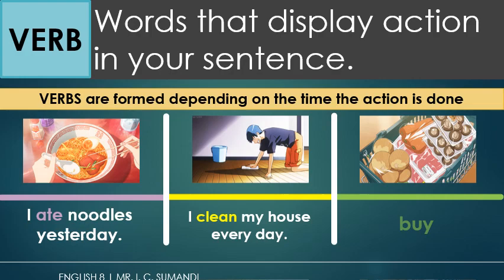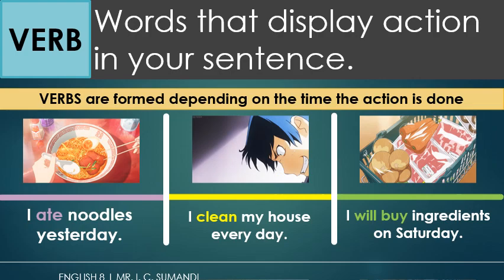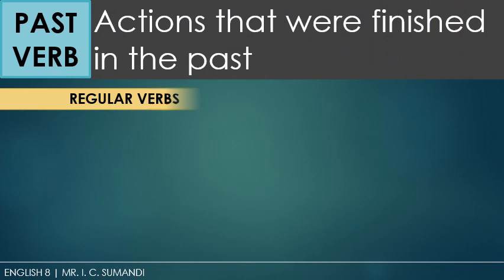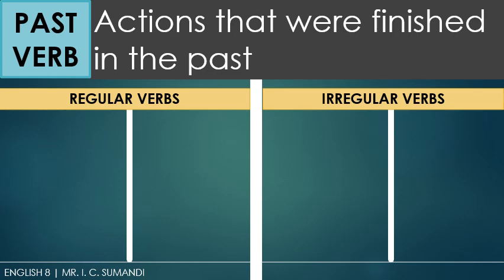However, we must understand that verbs are formed depending on the time the action is done. There are three basic timelines — they are simply called past tense, present tense, and future tense. Let's start with the actions that were finished in the past: past tense. Verbs in their past form can be easily remembered as long as you are familiar with most of them. Verbs in past form are divided into two categories: regular verbs and irregular verbs.